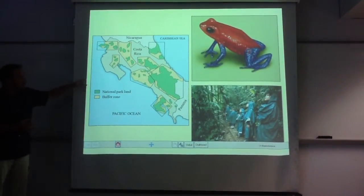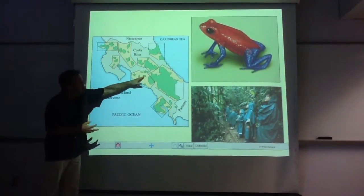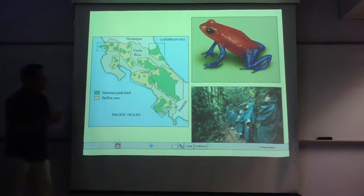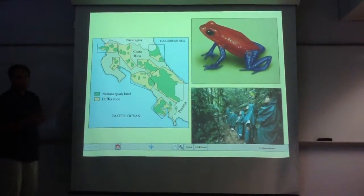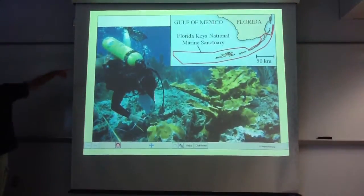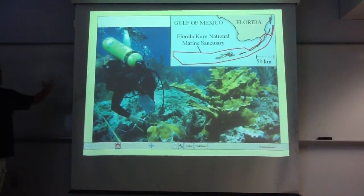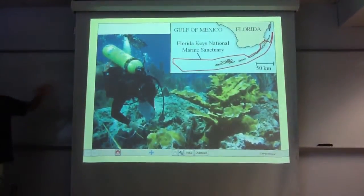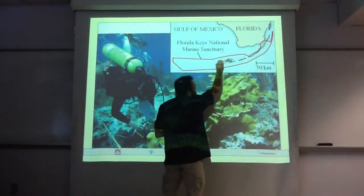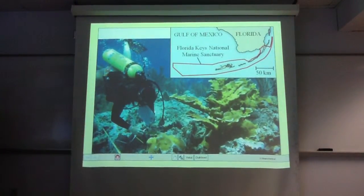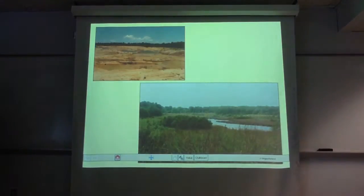All these green areas in Costa Rica are national parks. They've realized there are issues with fragmented bits of park, so they have buffer zones and corridors between national parks. When you look at the size of the country, it's almost like the whole thing is a national park — a very different approach than most developing countries take. The Florida Keys Marine Sanctuary extends everything inside the red line, and you want something all connected: the larger and more connected the area, the better it will be as a conservation tool.